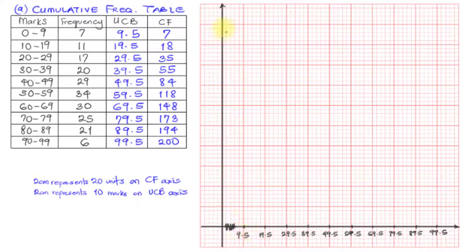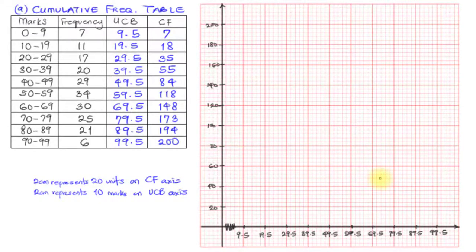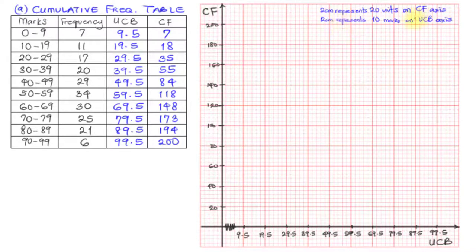On the vertical axis, using incremental values of 20: 20, 40, 60, 80, 100, 120, 140, 160, 180, and 200. We now have all our values correctly denoted on the graph sheet. Each small box on the cumulative frequency axis represents 4 units (since 5 small divisions span 20 units). On the upper class boundary axis, each small division represents 2 marks.